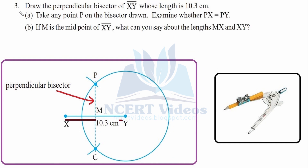Question 3: Draw the perpendicular bisector of line segment XY whose length is 10.3 cm. Construct the line segment XY, place the needle at Y and construct a circle with radius greater than half the line. With the same radius, construct another circle cutting at P and C — we just need those two points, not full circles.